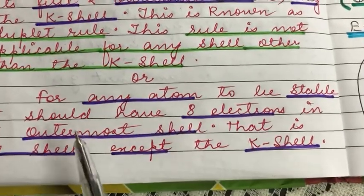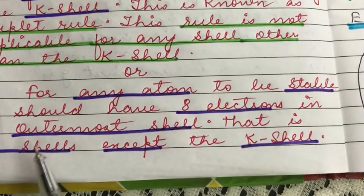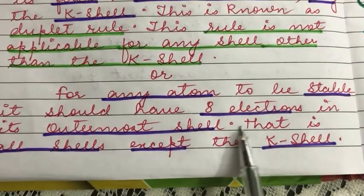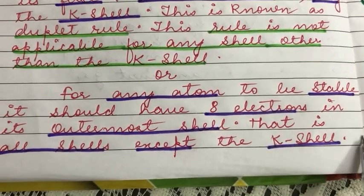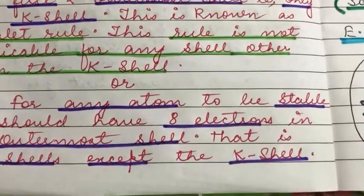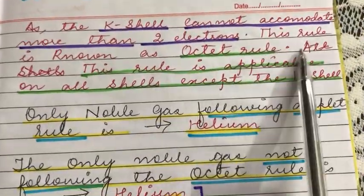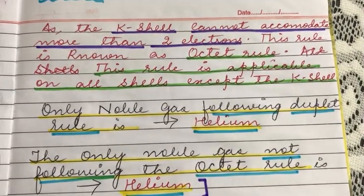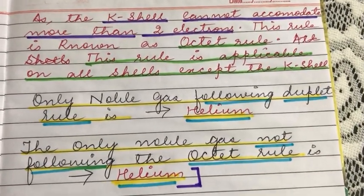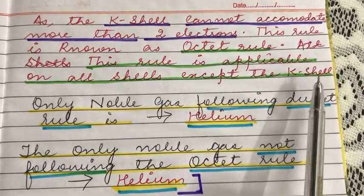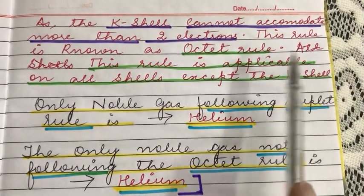The other rule is that for any atom to be stable, it should have eight electrons in its outermost shell — that is, all shells except for the K shell, since the K shell cannot accommodate more than two electrons. The octet rule is applicable for all shells but not the K shell.